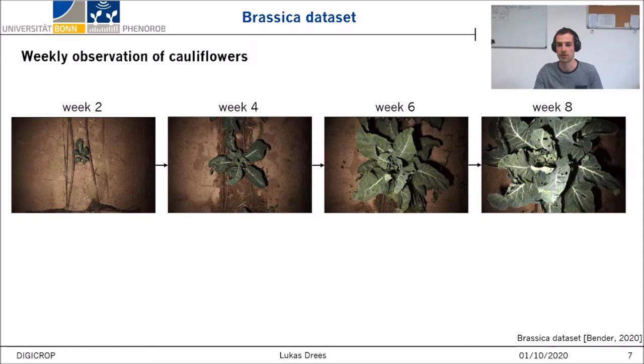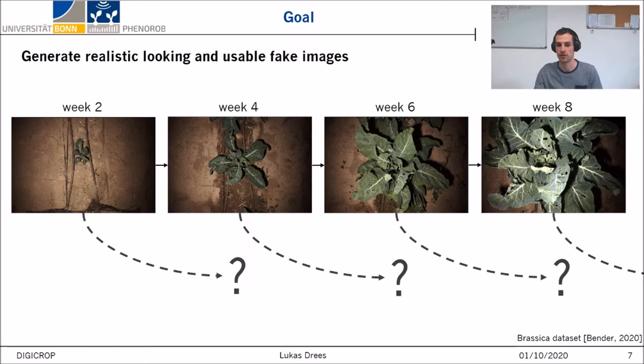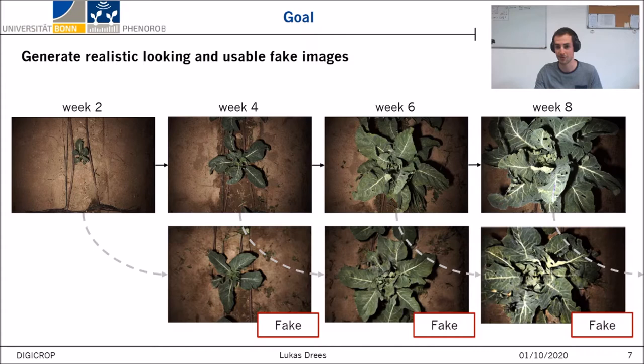We are now following two goals. First, we want to create realistic-looking images. And second, we want the images to be meaningful and thus actually usable. For the first goal, I can already anticipate: yes, it is possible to create such images that look realistic and could represent real grown phenotypes of the source image. With a two-week growth model, for example, it is possible to derive from week 2 how it would look in week 4, from week 4 how it would look in week 6, and so on.